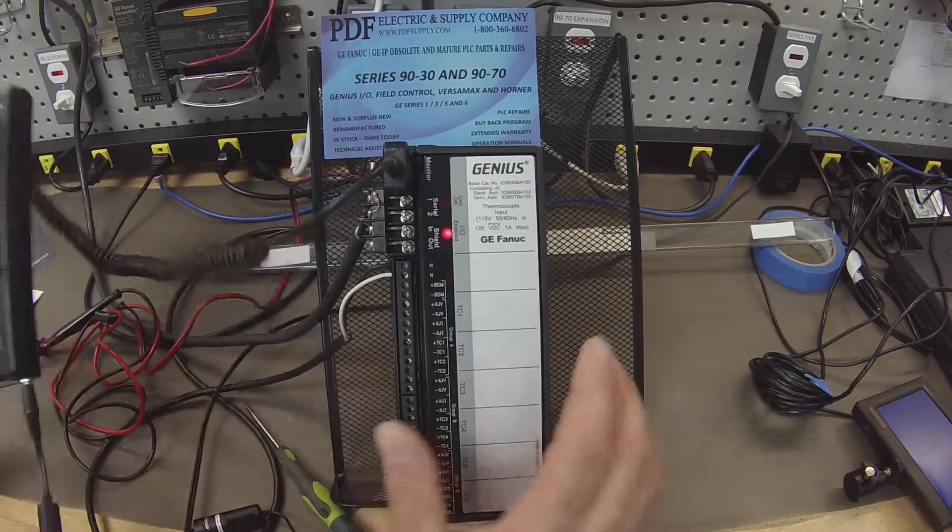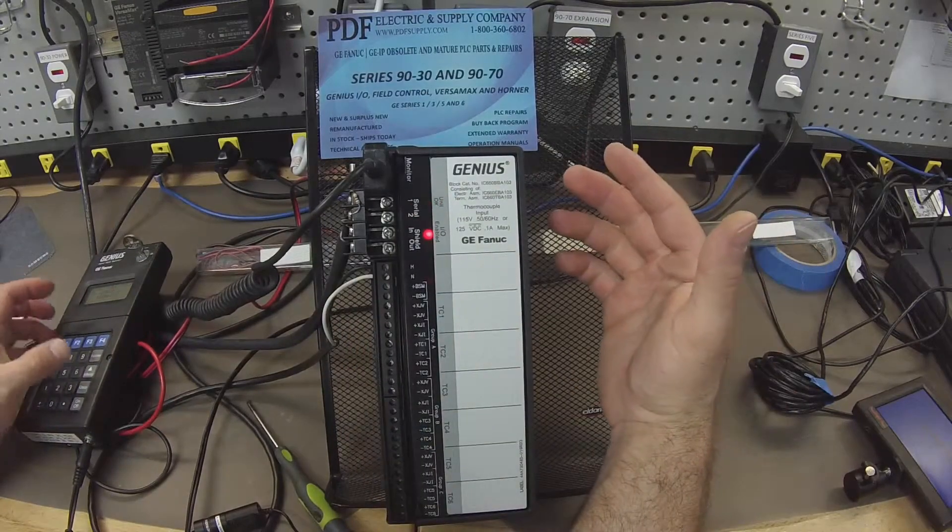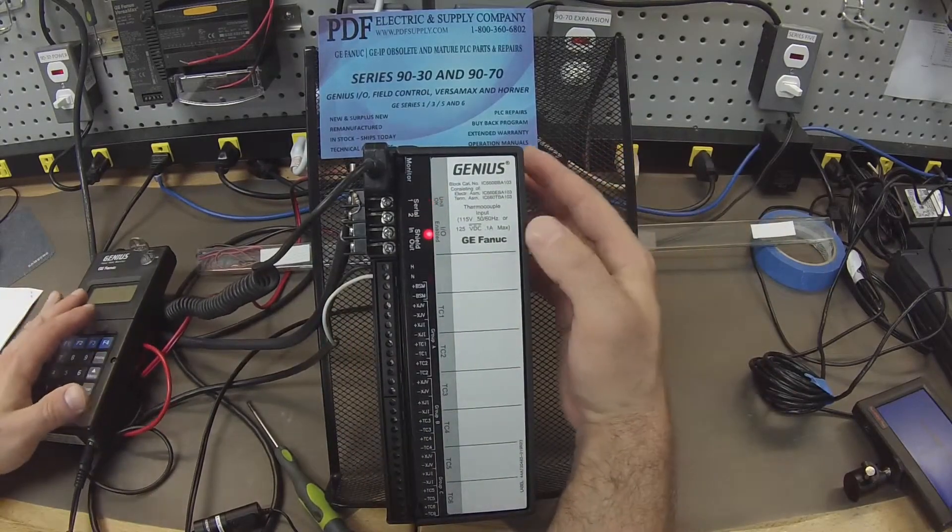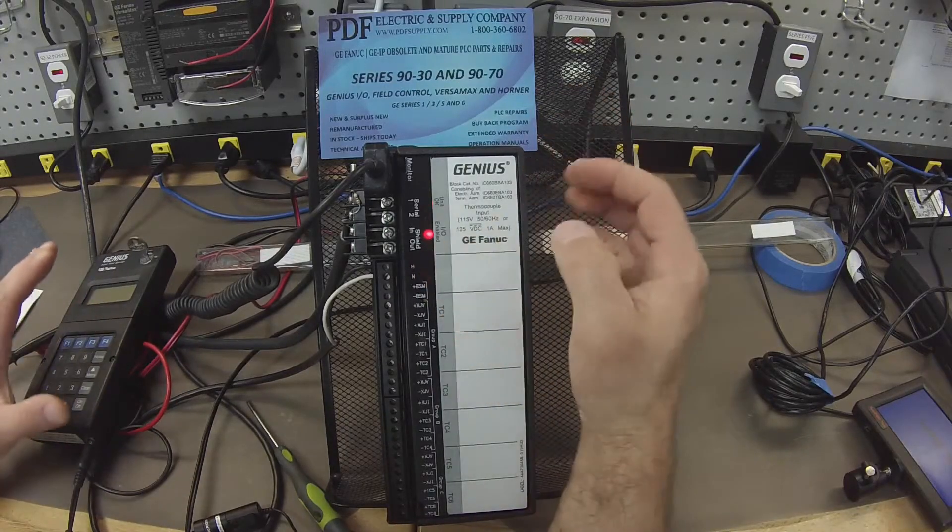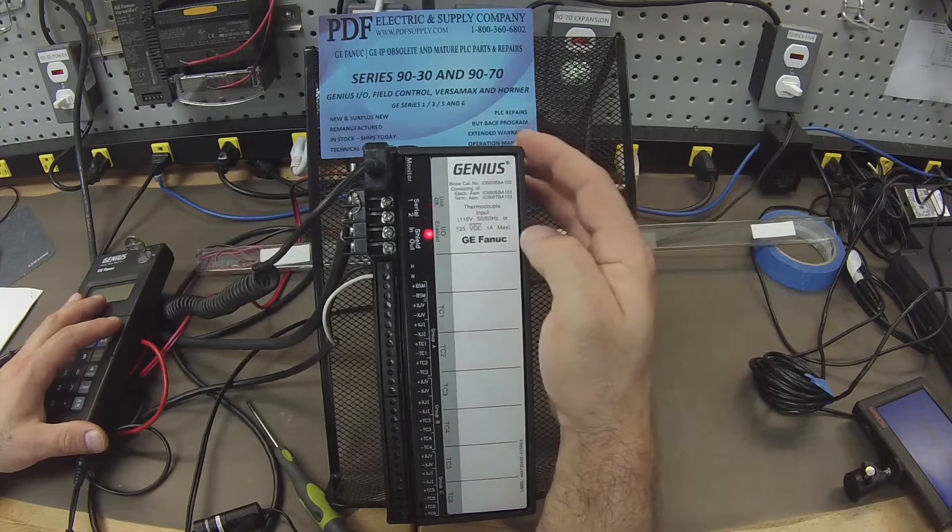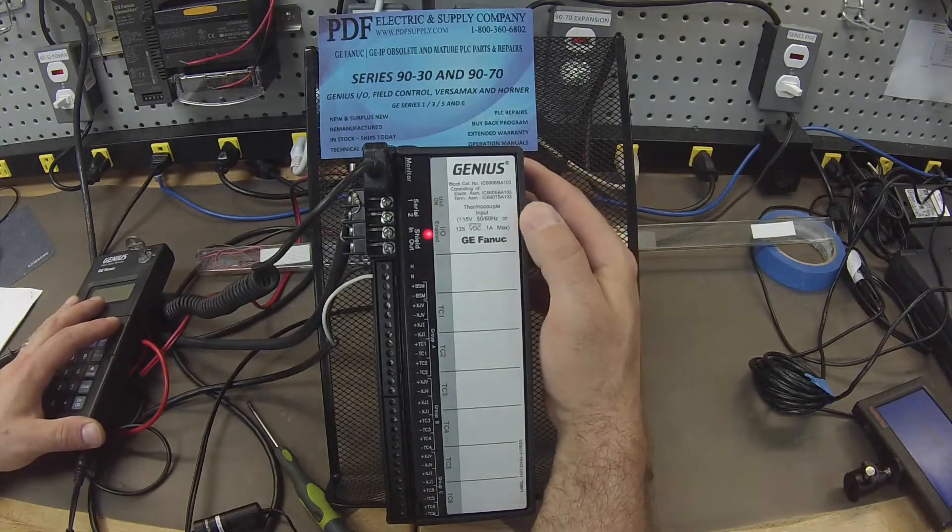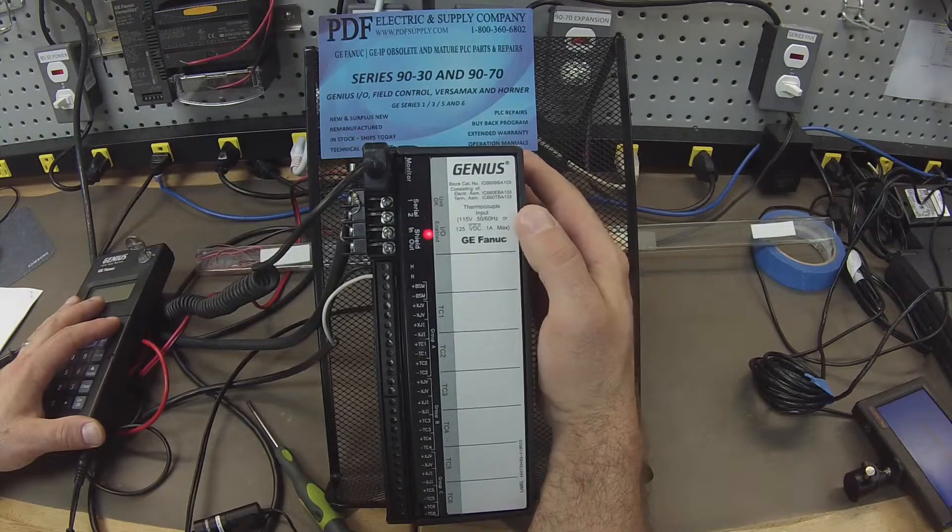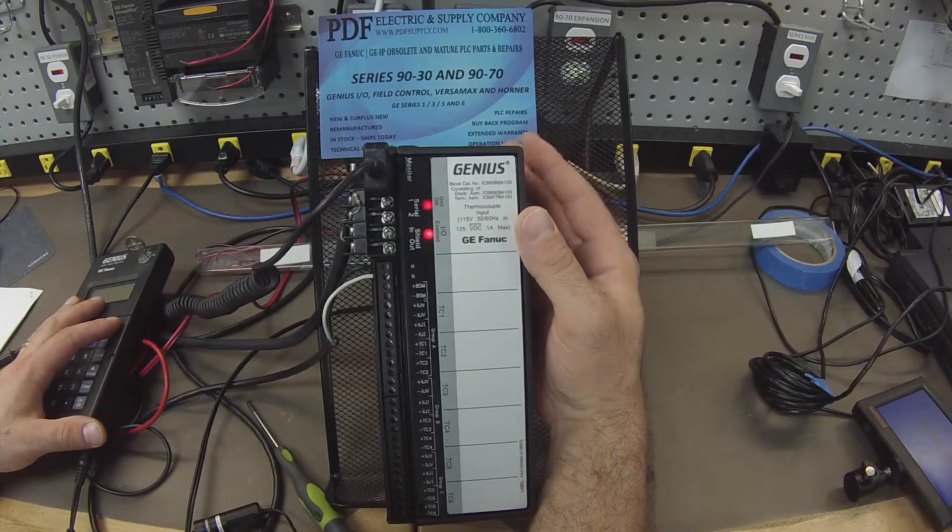Now if you power up your Genius Block and you don't get any lights on, or if you're using the handheld monitor and you go to program the ID and you get a question mark and you're unable to store or program any information in the Genius Block and it's not responding, then that's something we typically repair that we see quite often.